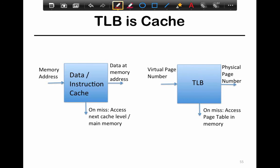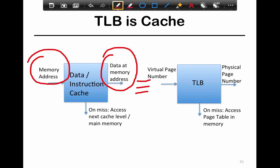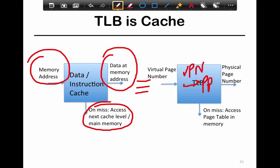The TLB is fundamentally a cache — it's similar to data caches. In a conventional data or instruction cache, they store memory words of data at a particular memory address. You index them by the memory address and get out the actual data at that location. On a miss, you access the next level in cache or main memory. Similarly, the TLB caches VPN to PPN translations. You index it by the virtual page number, the data it provides is the physical page number, and on a miss you go look up the slower page table.